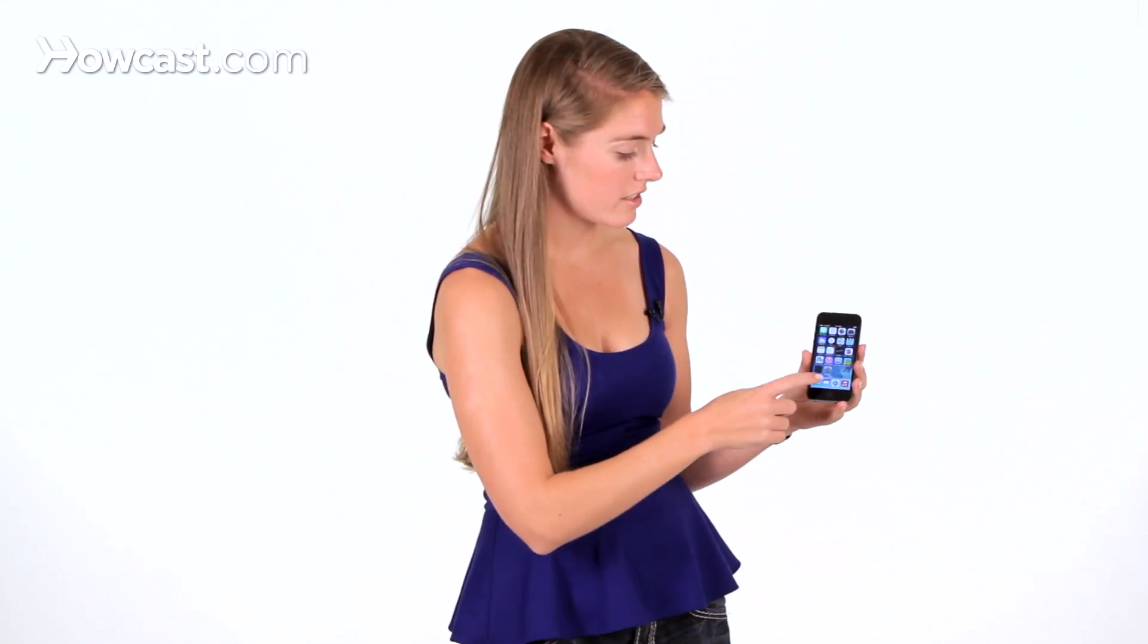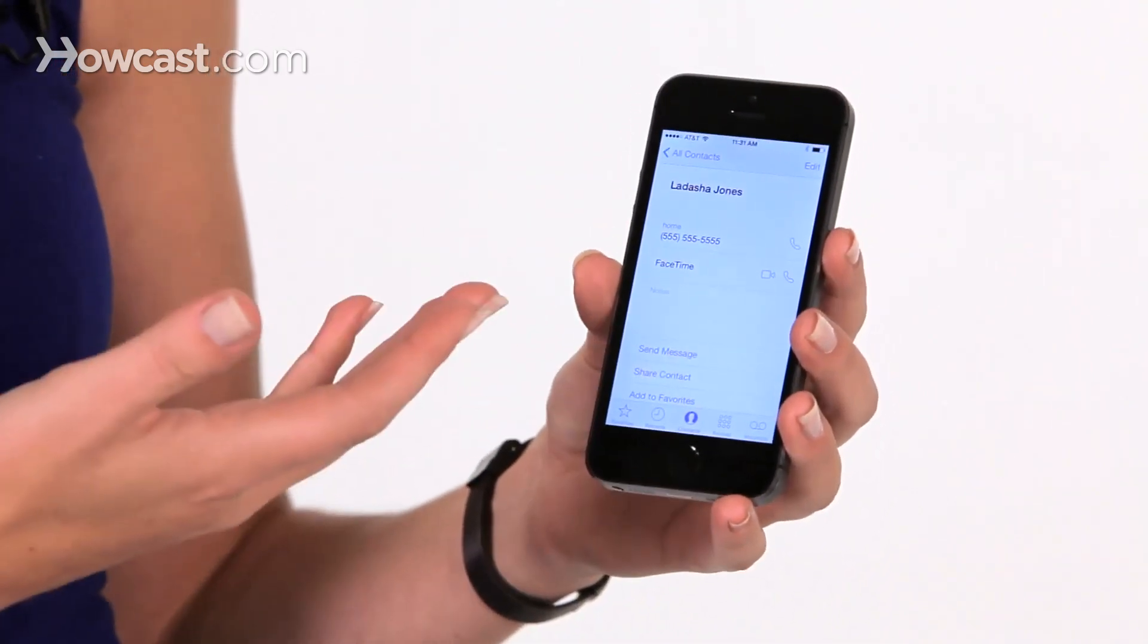So my sister's name is pronounced Ladasha, but Siri pronounces it Ladasha. So what I can do to change that is I can go into my contacts, and I've pulled up hers.